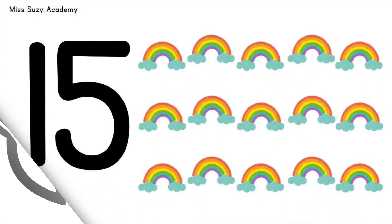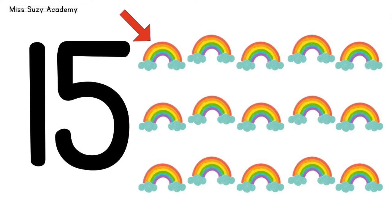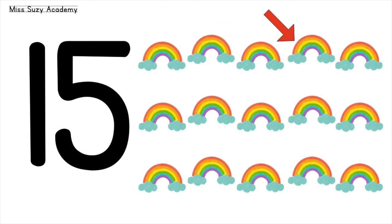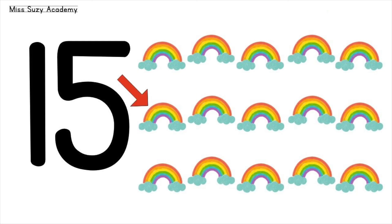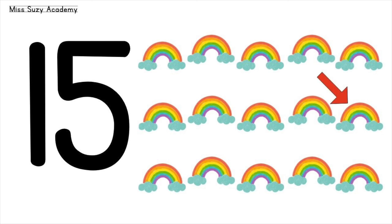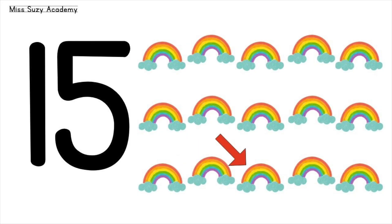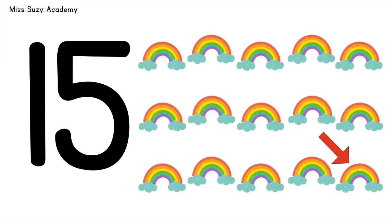Fifteen rainbows: one, two, three, four, five, six, seven, eight, nine, ten, eleven, twelve, thirteen, fourteen, fifteen. Fifteen rainbows.